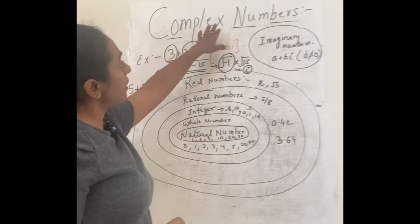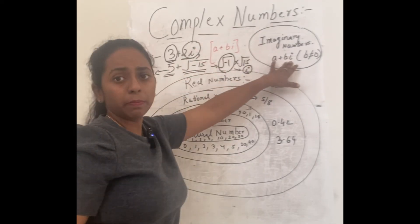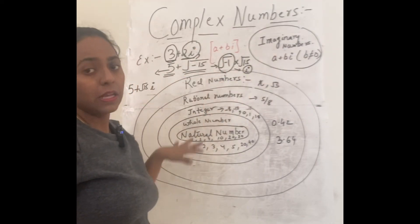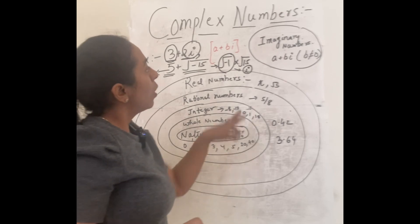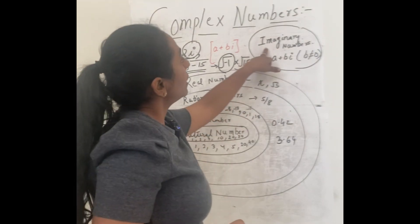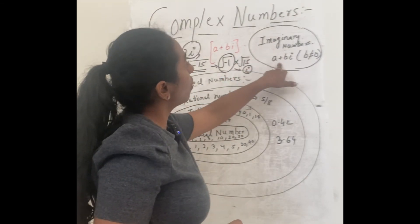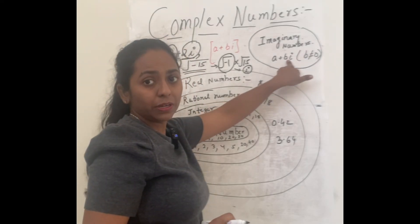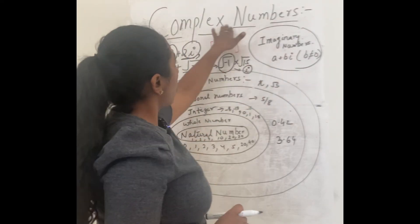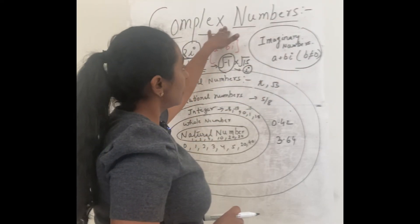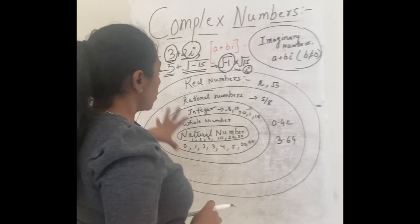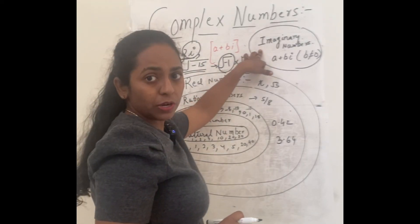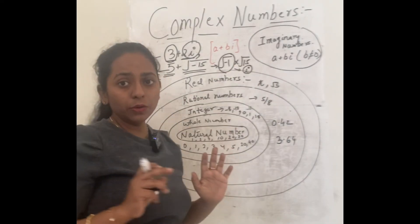What if there is no imaginary part — is it still a complex number? Yes, it is still a complex number. But the imaginary part can't be zero. So complex numbers are numbers which include both a real part and an imaginary part. I hope you understand what a complex number is.